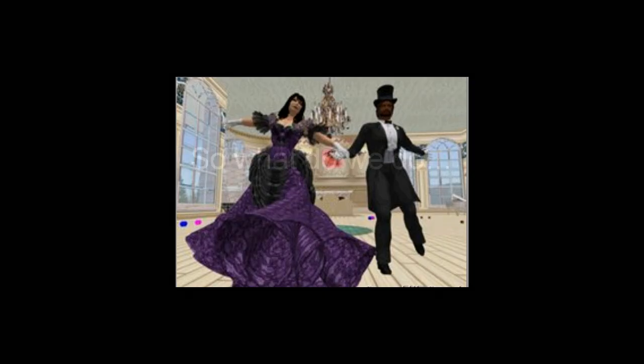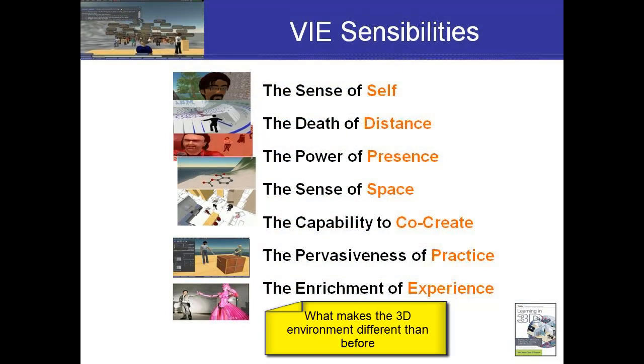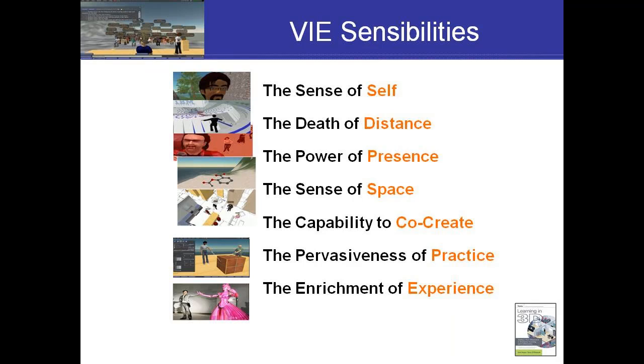What Carl and I decided to do was to try and write a book that spanned the whole gamut of what's going on in learning in 3D. At the core, after all of our examples, we developed what we believe is a comprehensive 3D learning architecture. Underlying all of this is something I'm about to talk about — the seven sensibilities — which are those things that make the 3D environment fundamentally different than any other environment we've had before. Then we'll move into some more of the design principles.